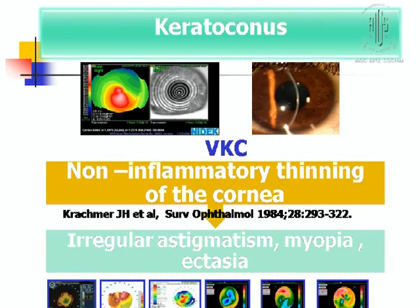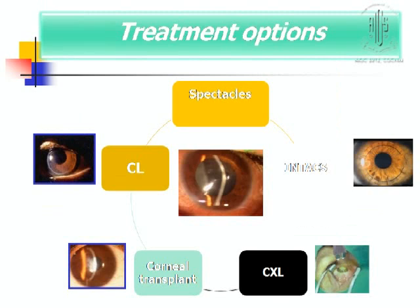Regarding keratoconus, it is non-inflammatory thinning of the cornea with irregular astigmatism, myopia, and ectasia, and it is aggravated by vernal keratoconjunctivitis. In early stage, you can treat with spectacles; if not, then contact lenses. Progressive keratoconus can be treated with collagen cross-linking, either alone or along with intracorneal rings. If everything fails, corneal transplant is the only answer.